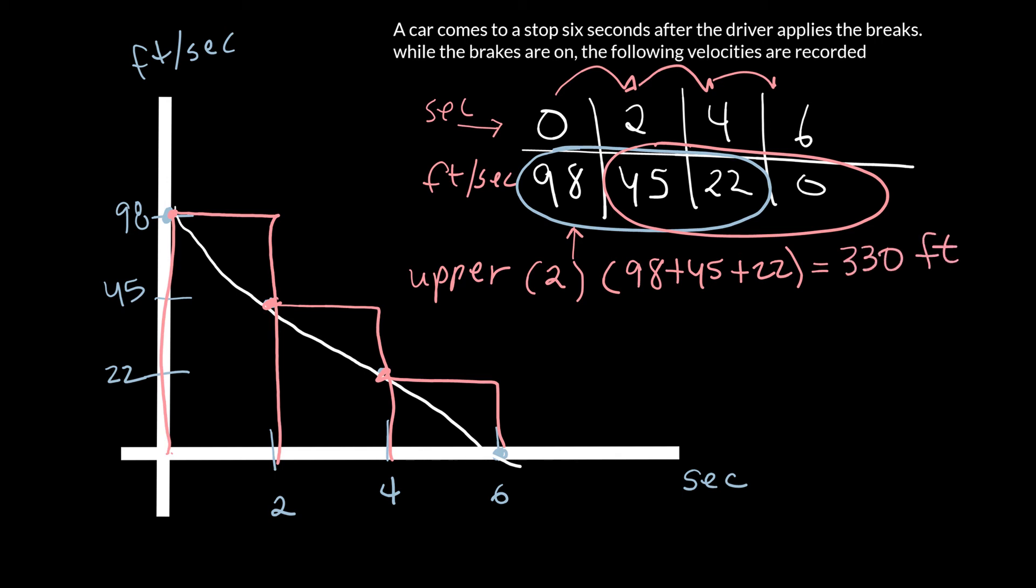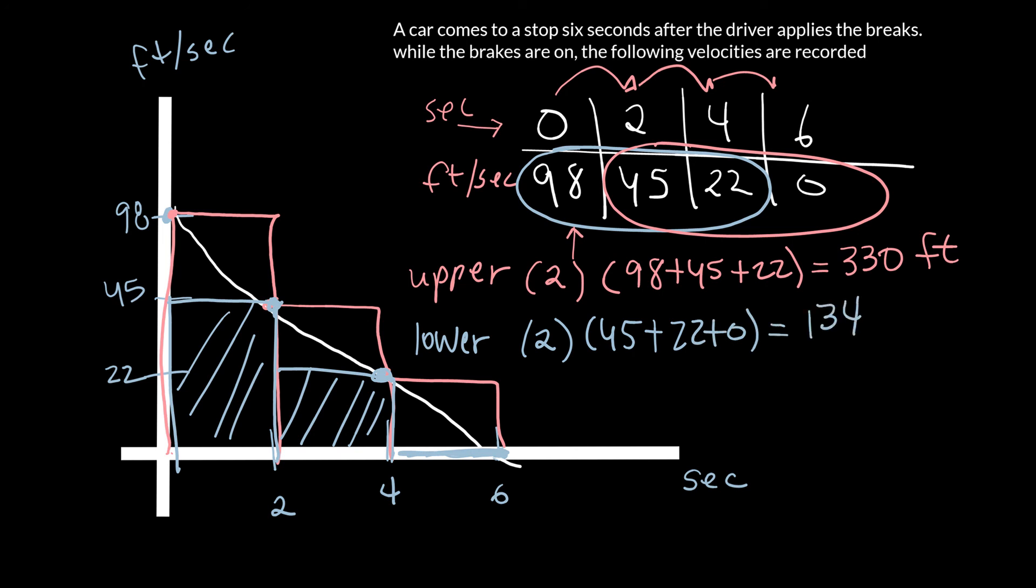And now I can do the same thing with a lower estimate. So the lower estimate, I'm going to start one over. And so I'm going to go up to that point, go to the left, come down, go to the next point, go to the left, go down. And then the next one, notice it's flat. And so now I'm finding the area of these three, which the last one, we're going to see the area is zero. So then a lower estimate would be two times 45 plus 22 plus zero. And I get 134 feet.